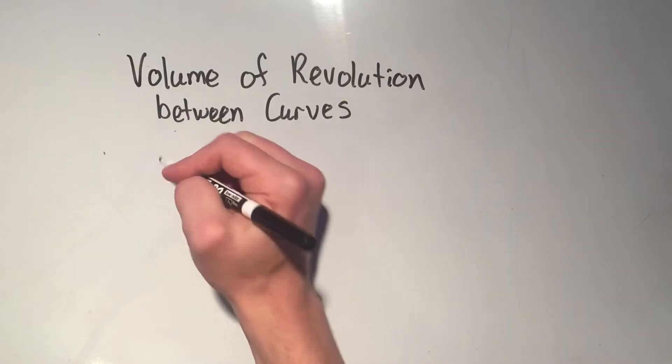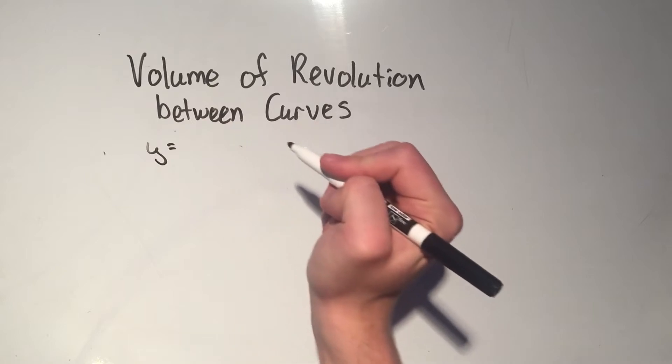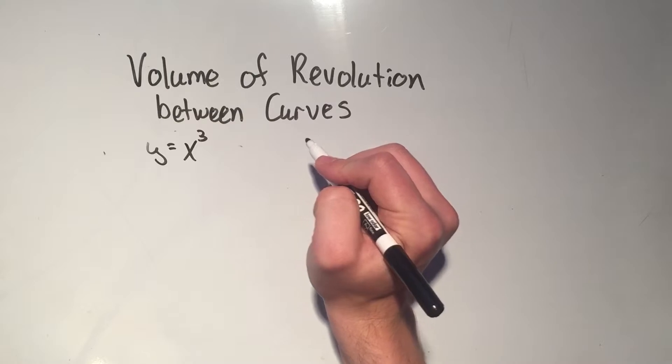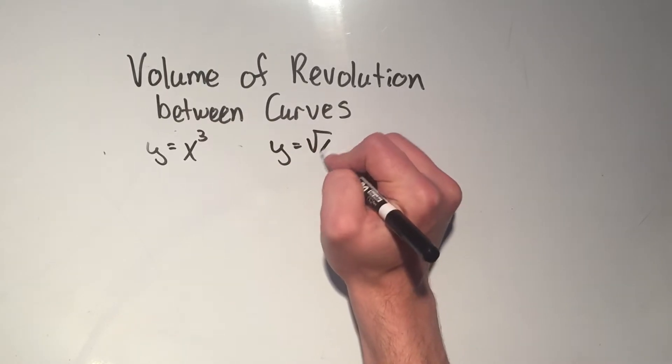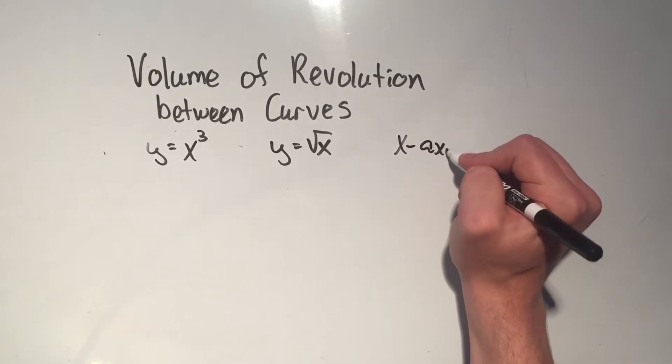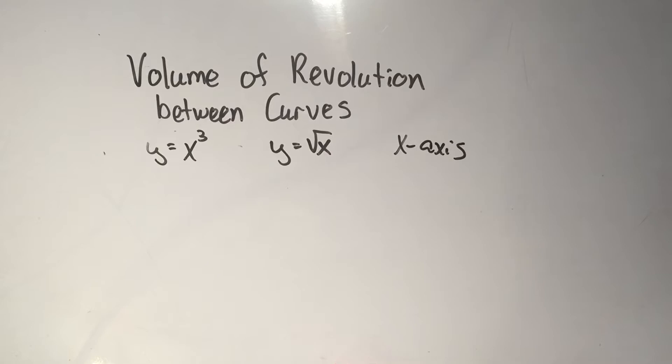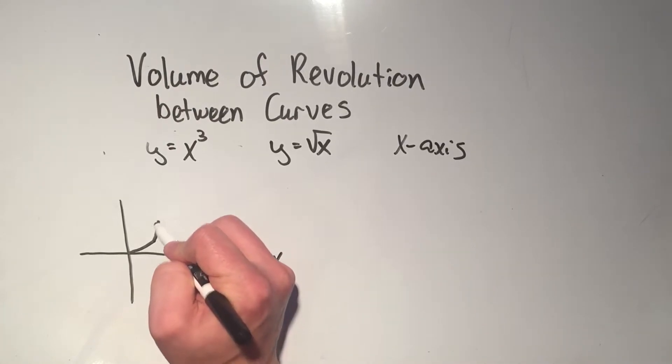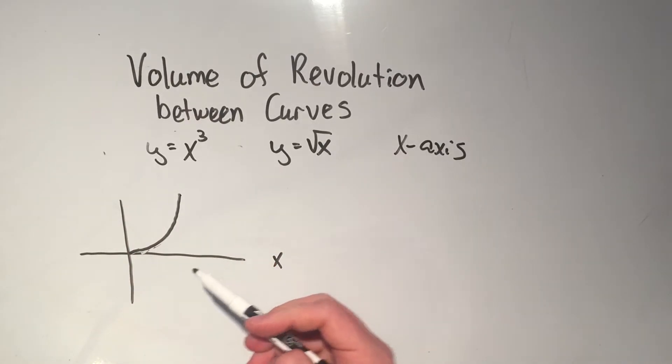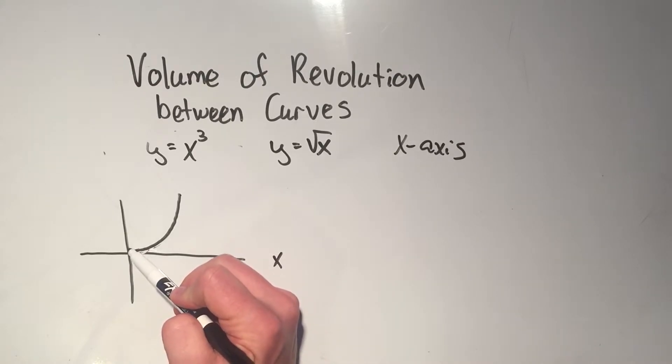Let me show you an example of how this is going to work. So I want to find the volume of revolution between two curves. And I'm going to do it between these two curves, x cubed and the square root of x. And I'm going to revolve around the x-axis. Let me draw this for you real quick, just so you can get an idea of what's going on. Now x cubed looks like this. Something like that. And the square root of x looks like that.